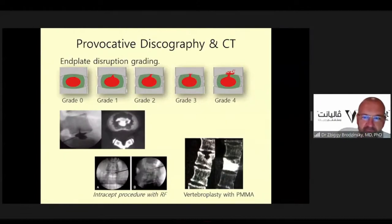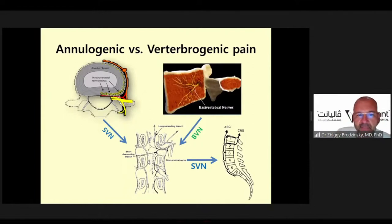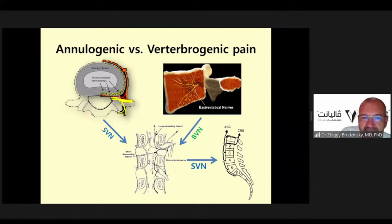Provocative discography is extremely important. Grades three, four, and even two can be considered as patients for this procedure. Sometimes discogenic and vertebrogenic back pain are combined, and for those patients we can do both procedures at the same time — performing sinuvertebral nerve ablation for discogenic pain and basovertebral nerve ablation for end plate disruption, treating annulogenic back pain and vertebrogenic pain as needed.